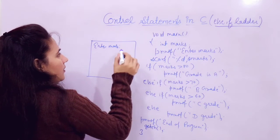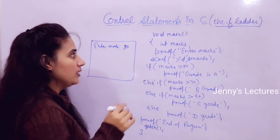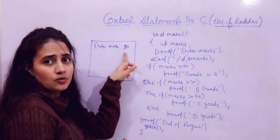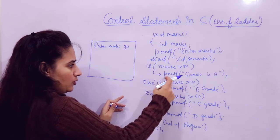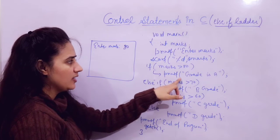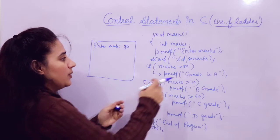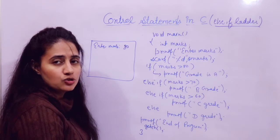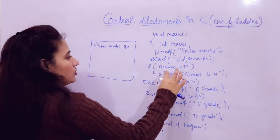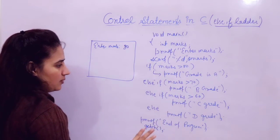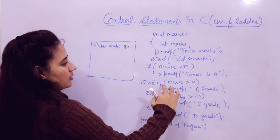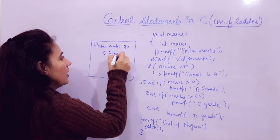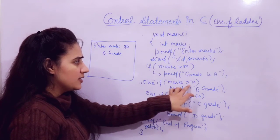Suppose you enter marks as 80. It will check the first condition: marks greater than 80. Marks are 80 only, so this is false — it will not execute the grade A statement. I'm not writing curly braces because I'm writing a single statement for each if. If you're printing two lines you'd need curly braces. So now it checks the second condition: marks greater than 70. Yes, 80 is greater than 70, so it will print B grade.